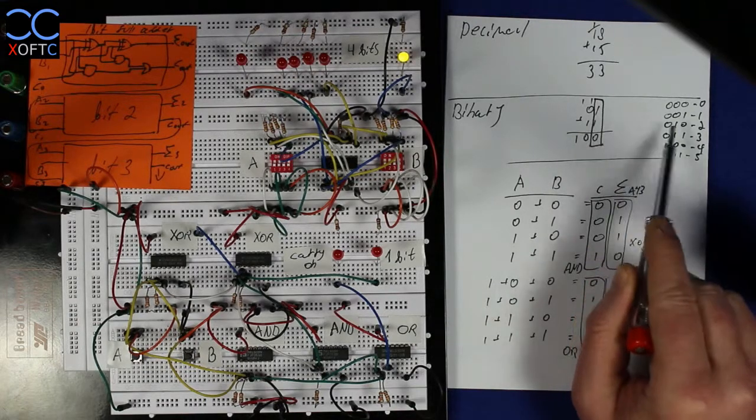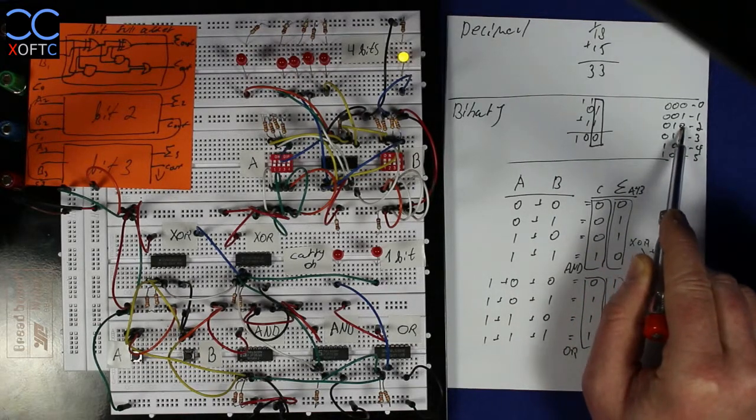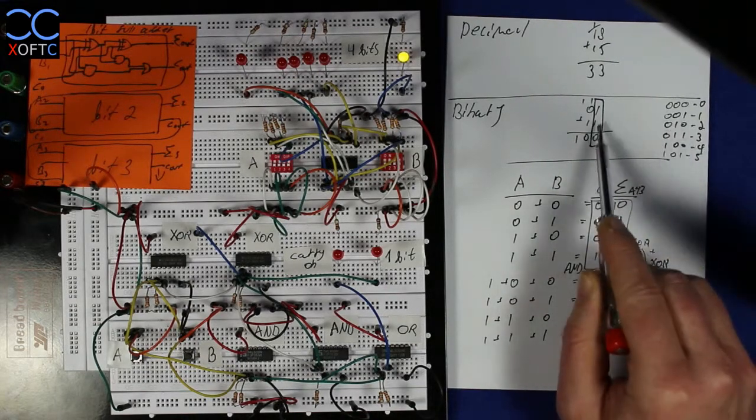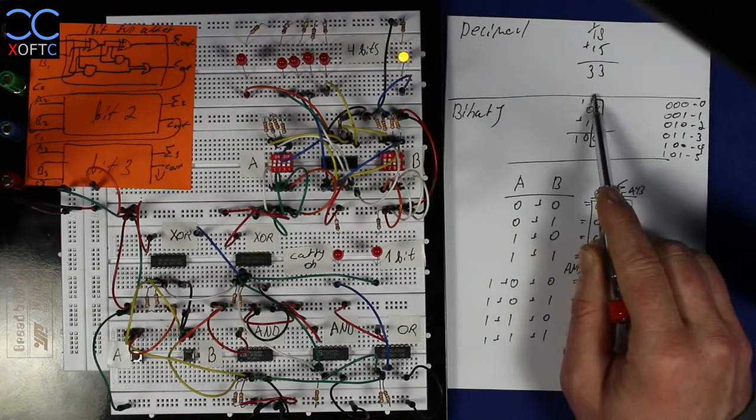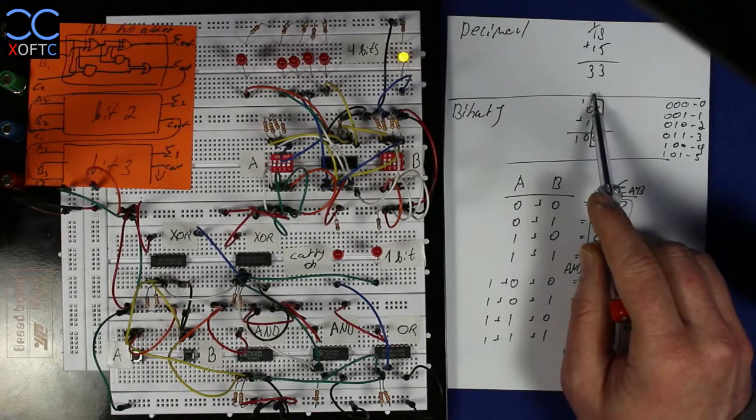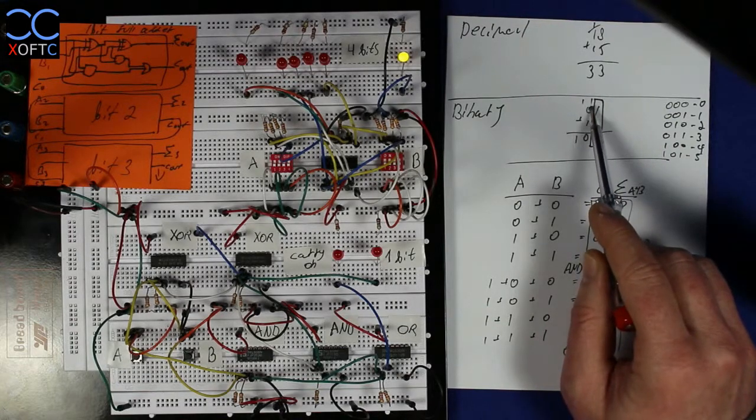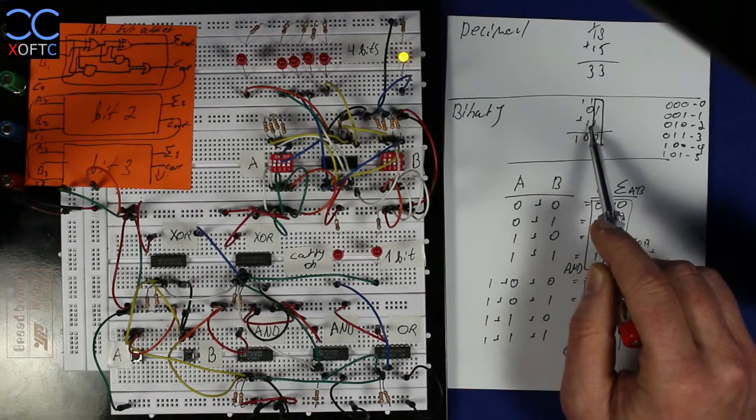1 plus 1 equals 2. And 2 is 0 and 1. We get a 0 on the sum of 1 plus 1 and we carry on a 1. Then 1 plus 0 is 1. And 1 plus 1 is again 2.